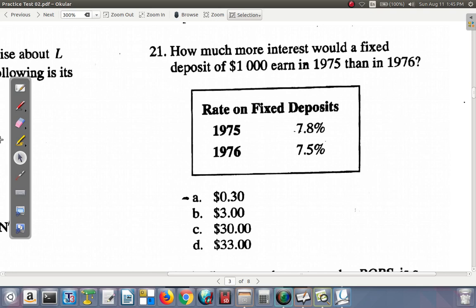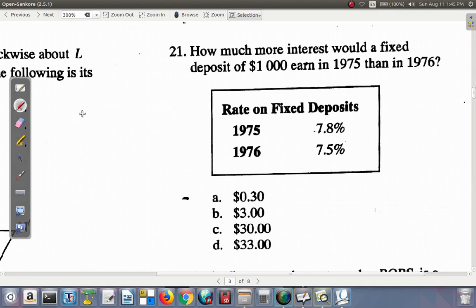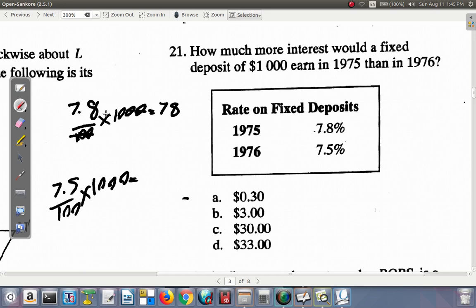Here, you have 7.8% of $1,000 that happens in 1975. In 1976, you have 7.5% of $1,000. So for each, 100 into 1,000, 100 into 1,010, this is $78, 10 times 7.8.